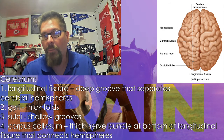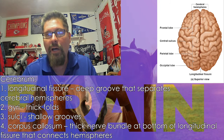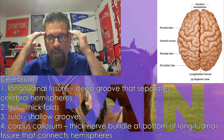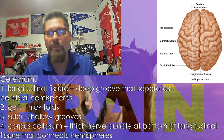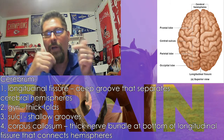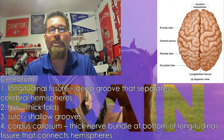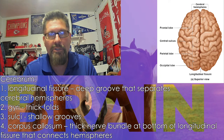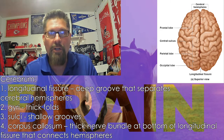The corpus callosum is a huge part of the brain, located deep at the very bottom inside. It consists of thick nerve bundles that allow information to pass back and forth between the two sides. It plays a role in why an injury to one side of the brain affects the opposite side of the body.